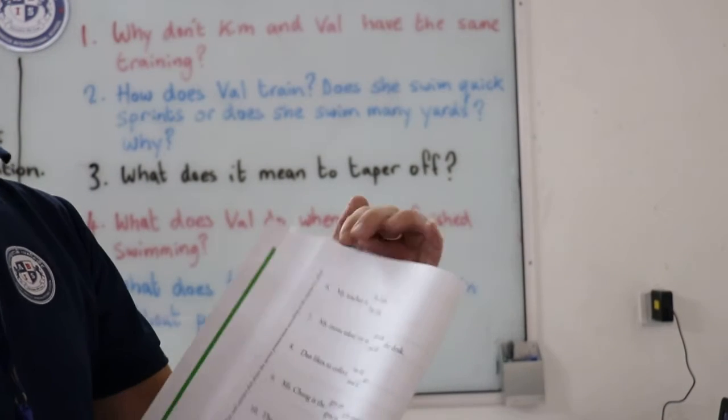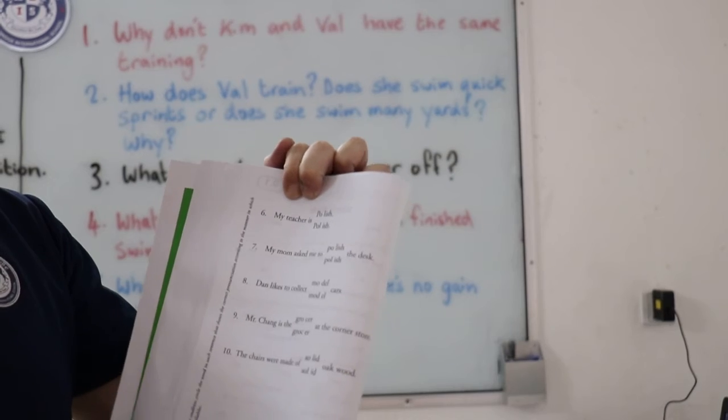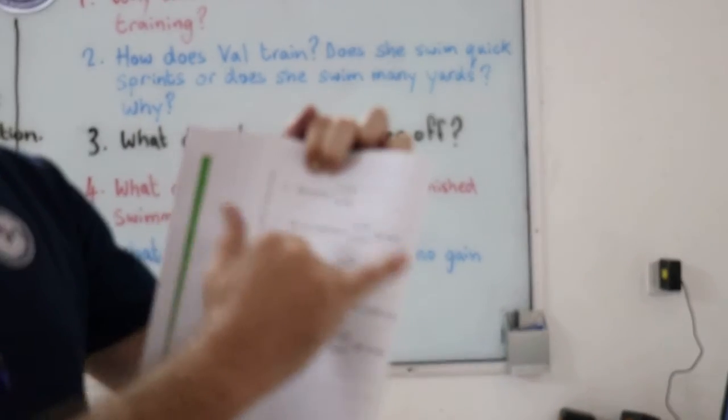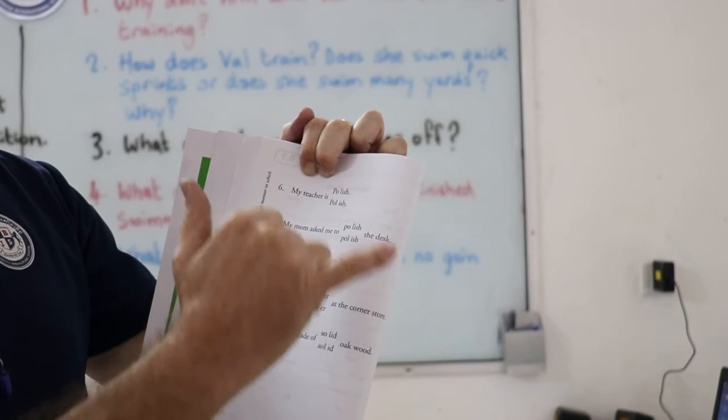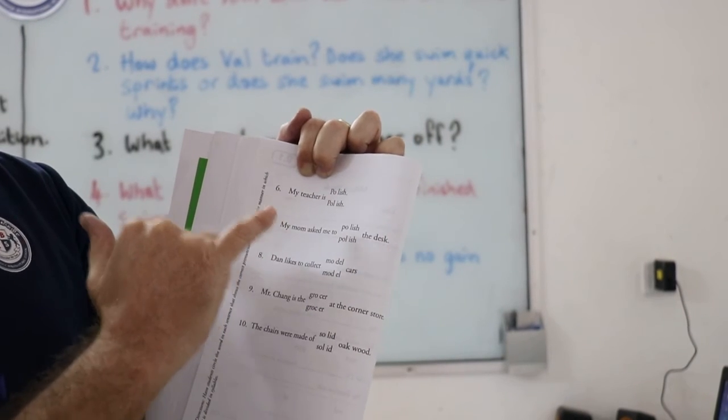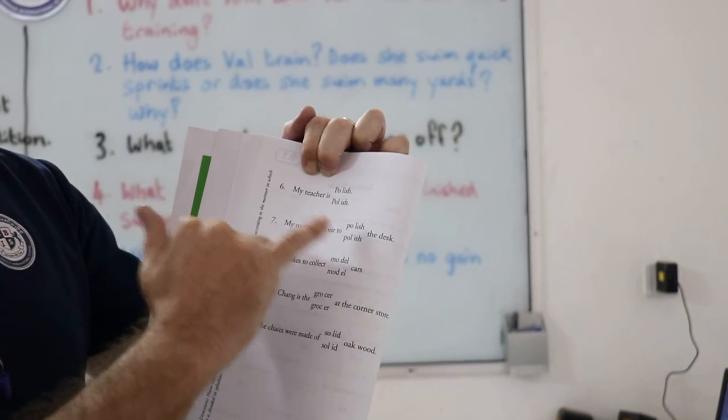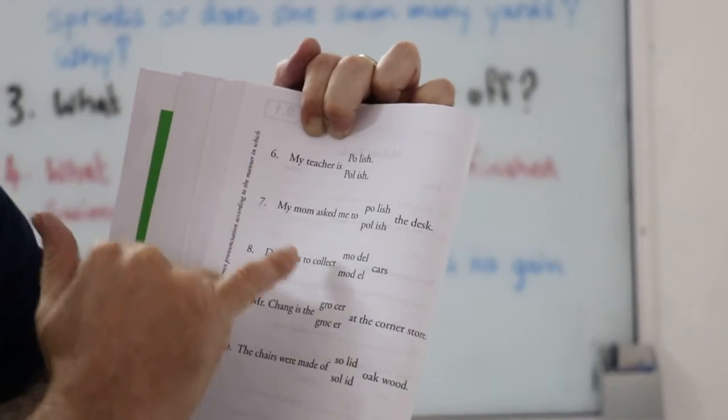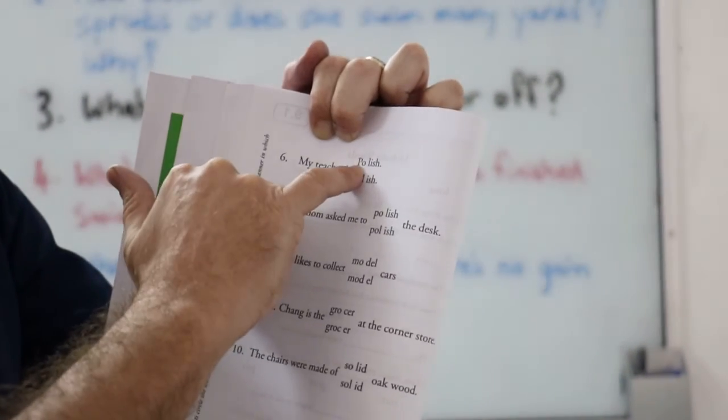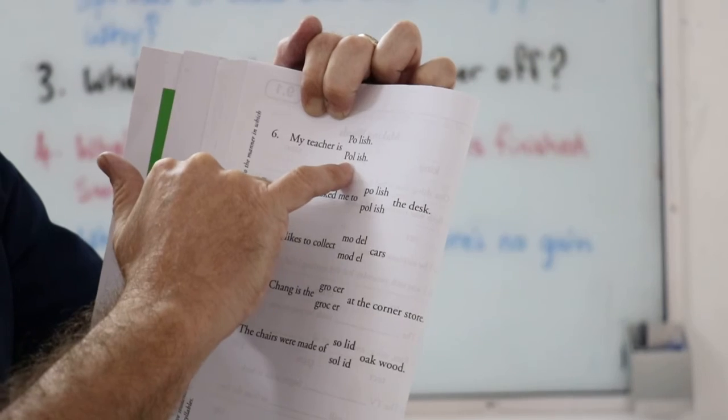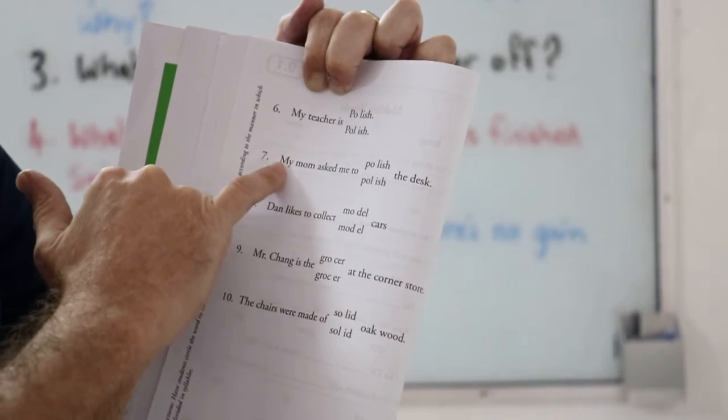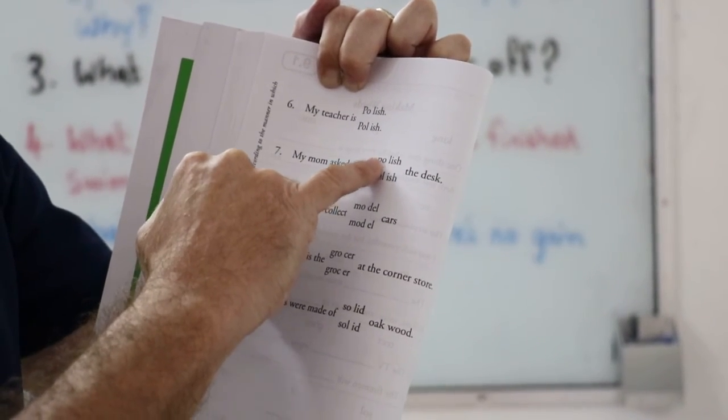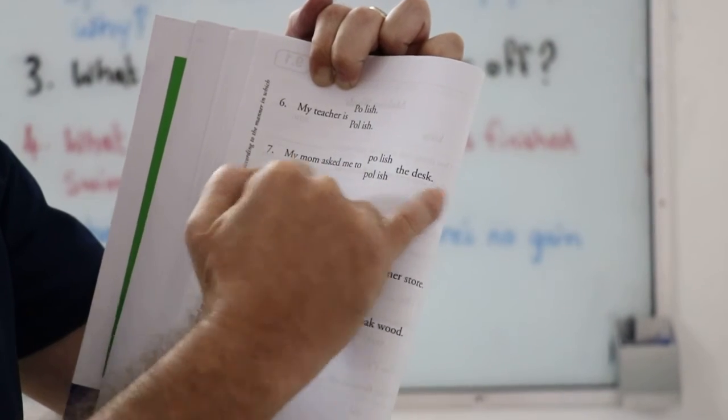Now, remember what we did earlier. You have to word chunk and figure out the right one. So, I just want you to put a circle around the correct answer. My teacher is what? That's six. It's either Polish or Polish. My mum asked me to what? Polish or Polish the desk.